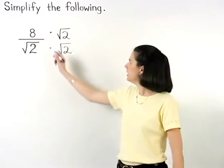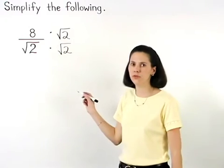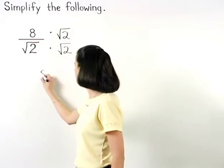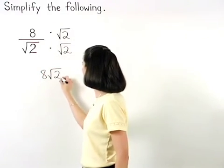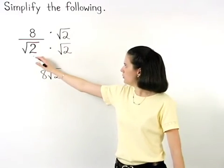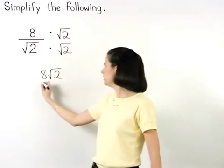On top, 8 times the square root of 2 is 8 root 2, and on the bottom, root 2 times root 2 is 2.